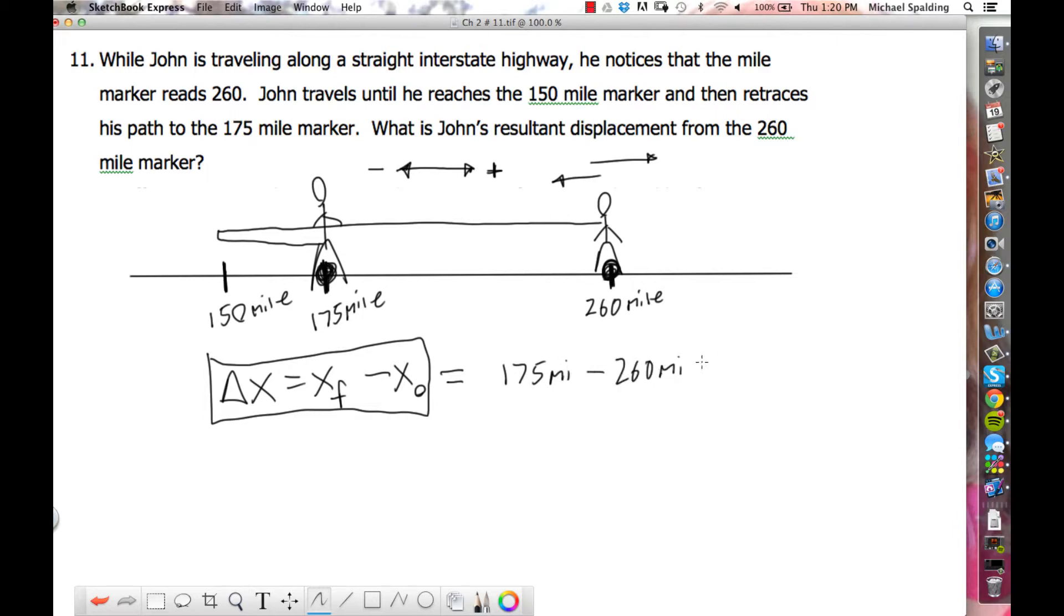This comes out as negative 85 miles. What does the negative mean? To the left. He's moving to the left. On the quiz it doesn't ask for this here, but I could ask you for the distance he traveled.